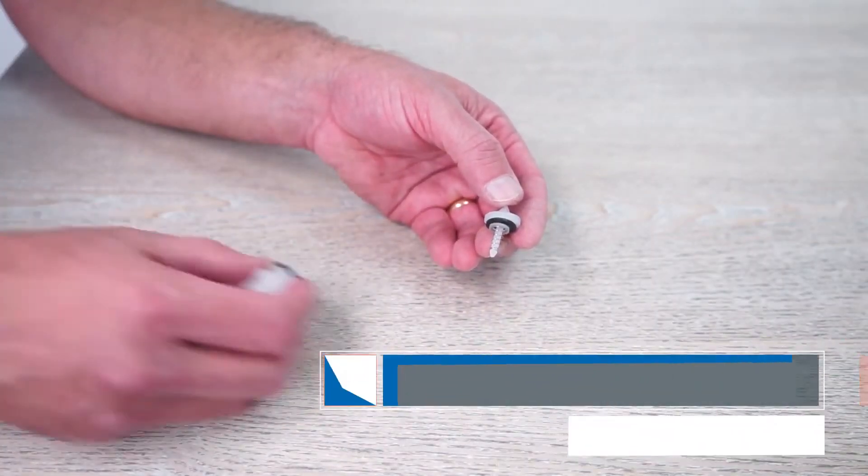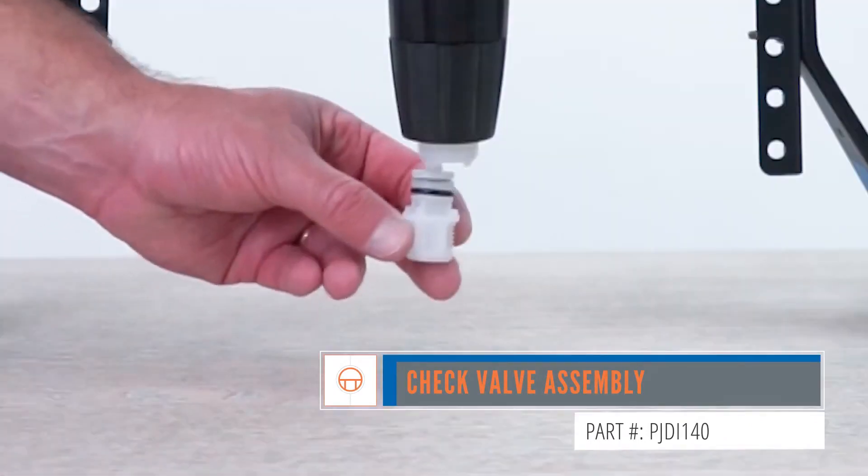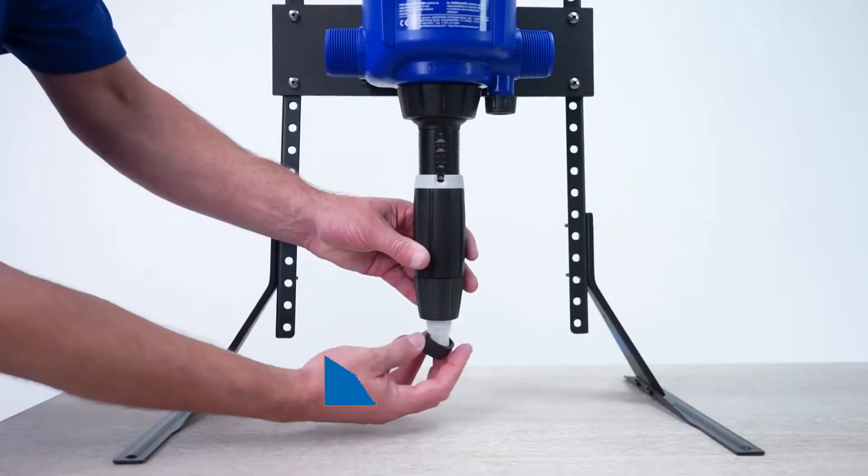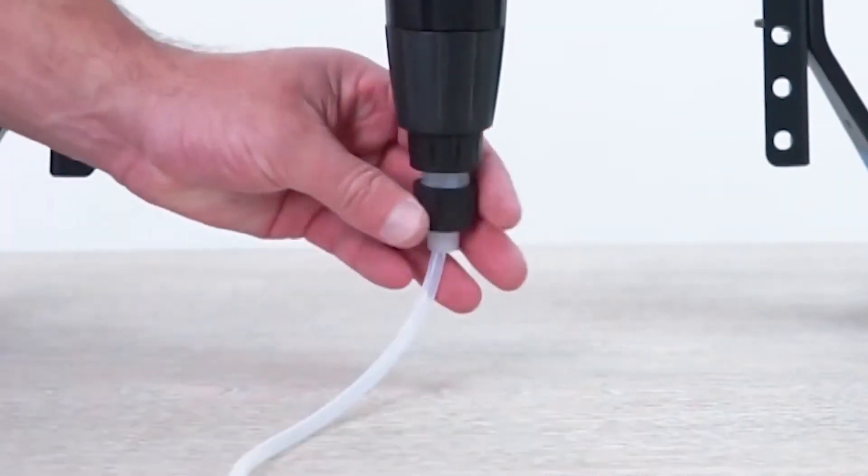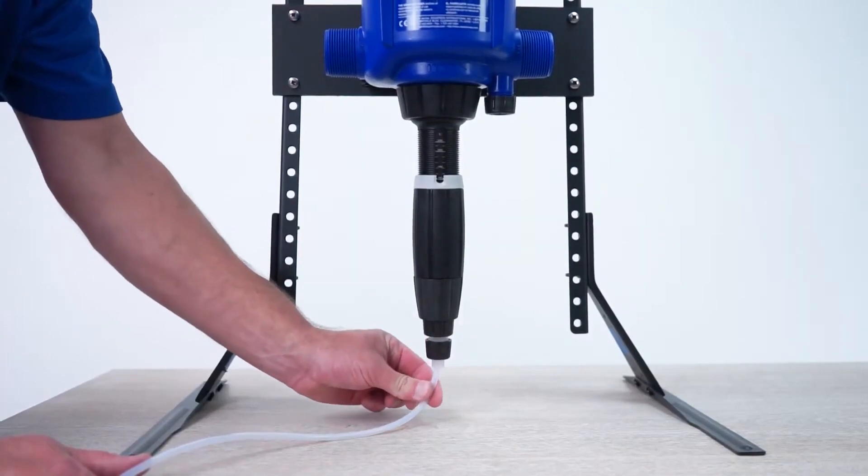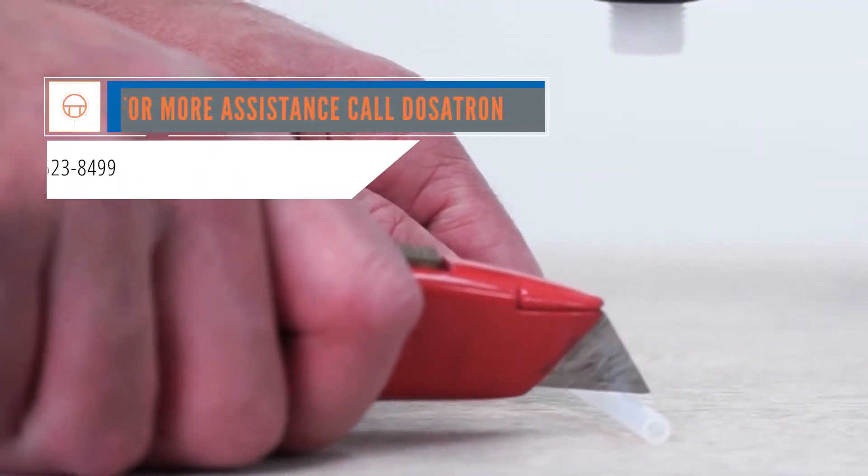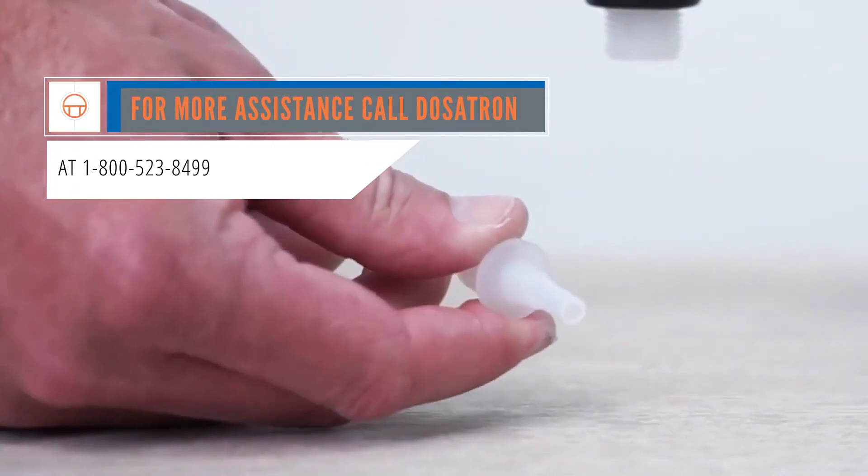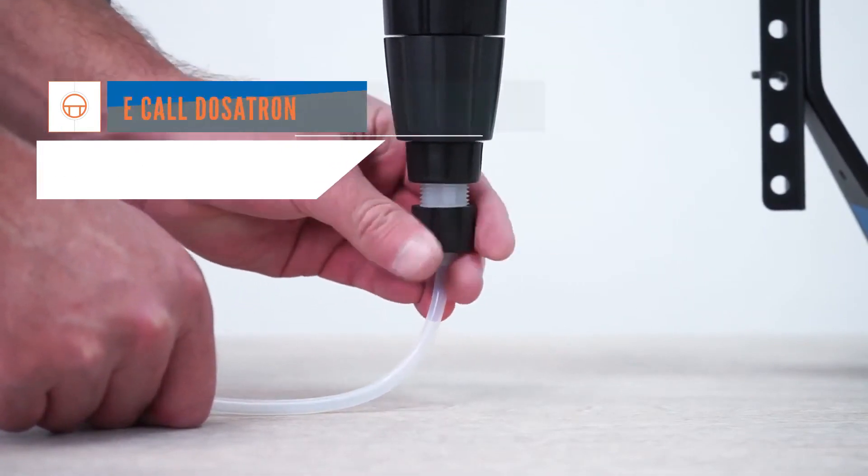To reassemble, place the new check valve assembly into the top of the barb. Reinstall the check valve and check valve nut hand tight. Now slide the hose onto the barb and hand tighten the nut. Afterwards, pull on the hose to make sure it is connected securely. If it comes off easily, you may need to cut another half inch off, reset the ferrule, and reattach the nut. This should stop the water from going back into the concentrate tank.